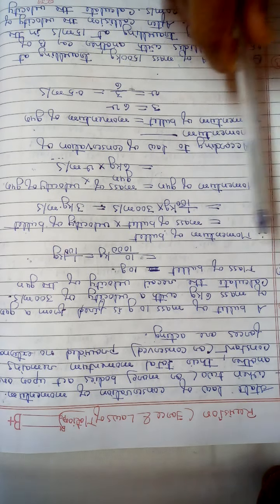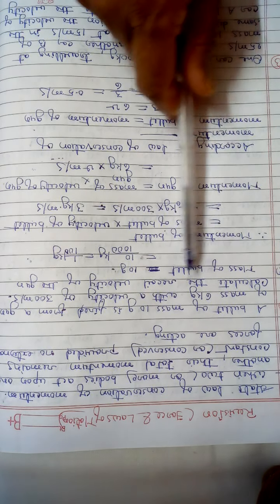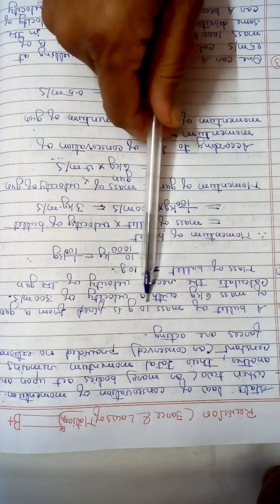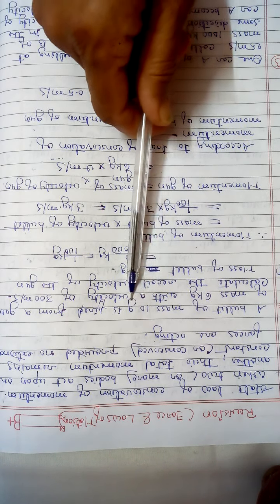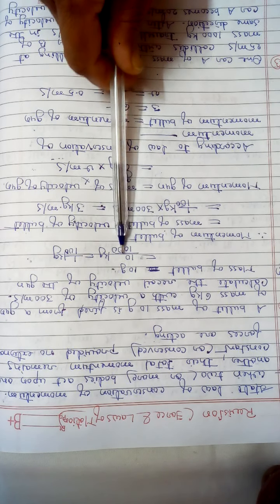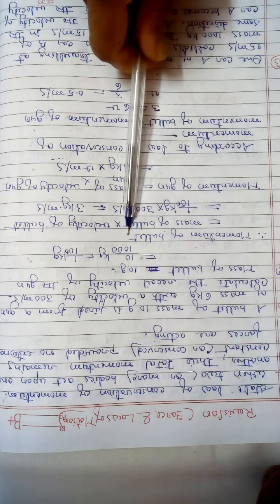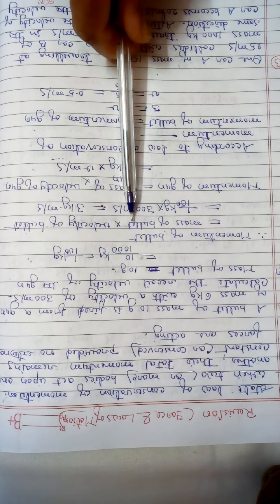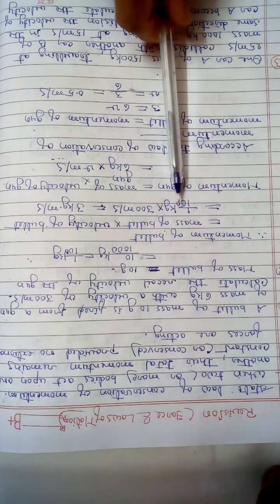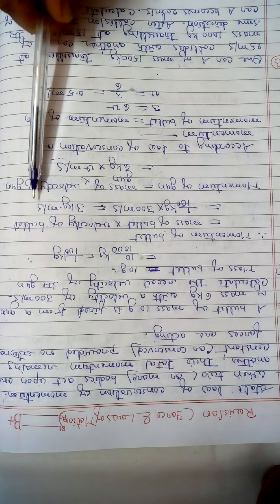First we have to find out the momentum of the bullet and the momentum of the gun. For that, we have to convert all quantities into SI units. The mass of the bullet is given in grams, so we convert it: 10 upon 1000 kg equals 1 upon 100 kg. Therefore the momentum of the bullet equals mass into velocity, which gives 300 divided by 100, giving a momentum of 3 kg·m/s.